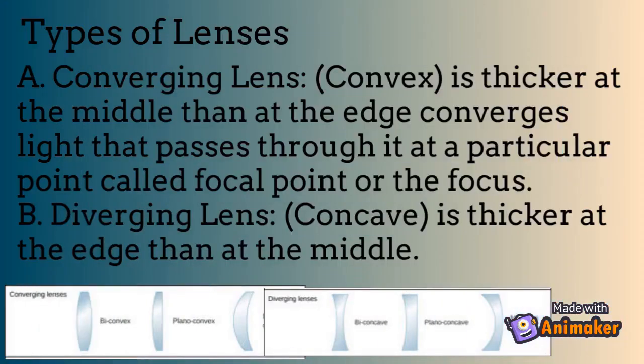There are two types of lenses. The first is the converging lens, also known as a convex lens. It is thicker at the middle than at the edge and converges light that passes through it at a particular point called the focal point or focus. The second is the diverging lens, also known as a concave lens. It is thicker at the edge than at the middle.